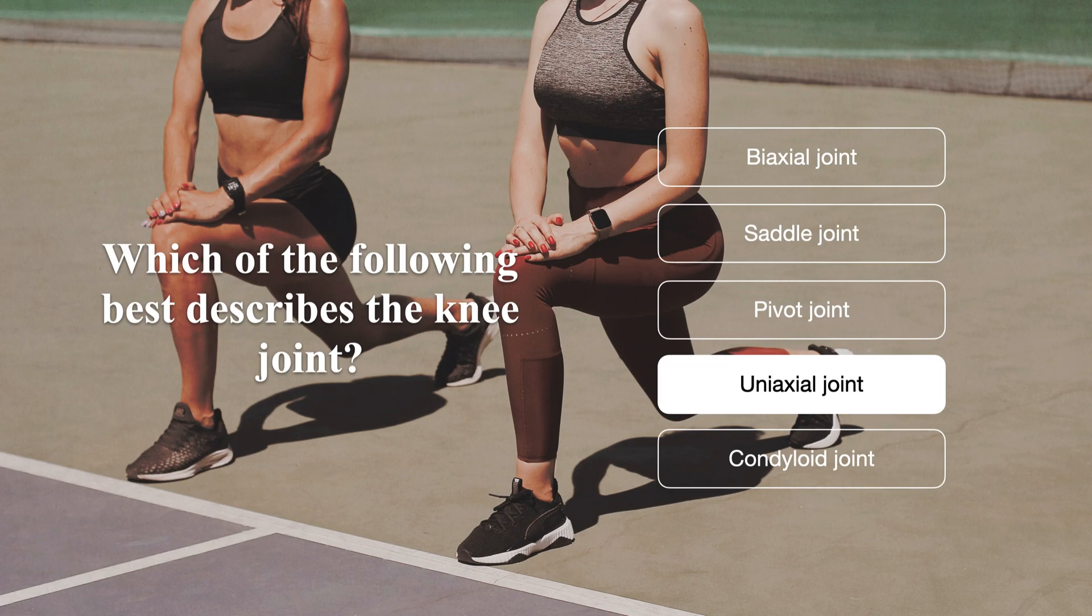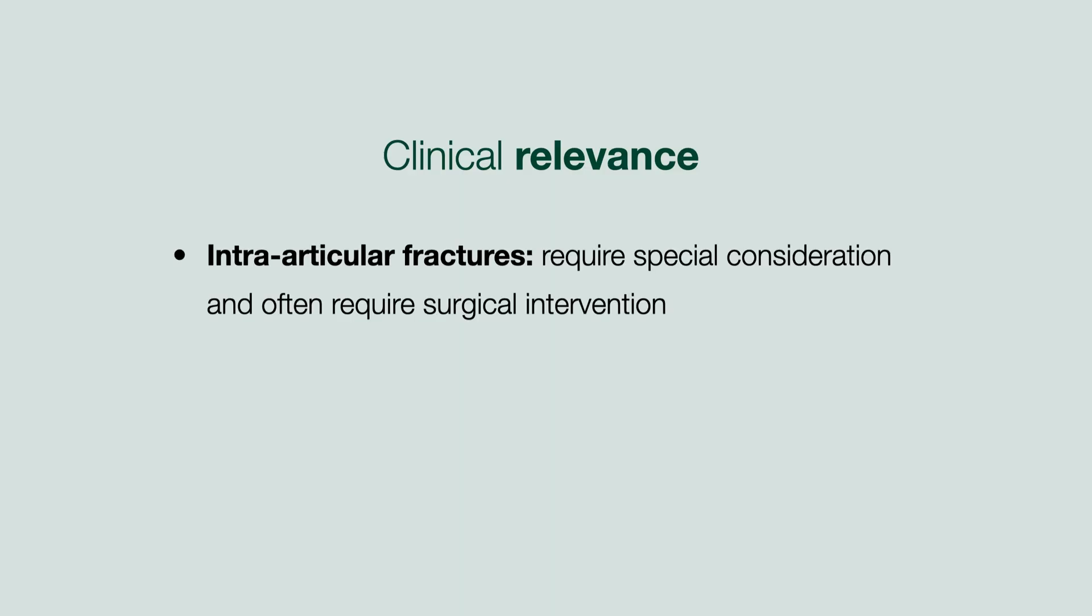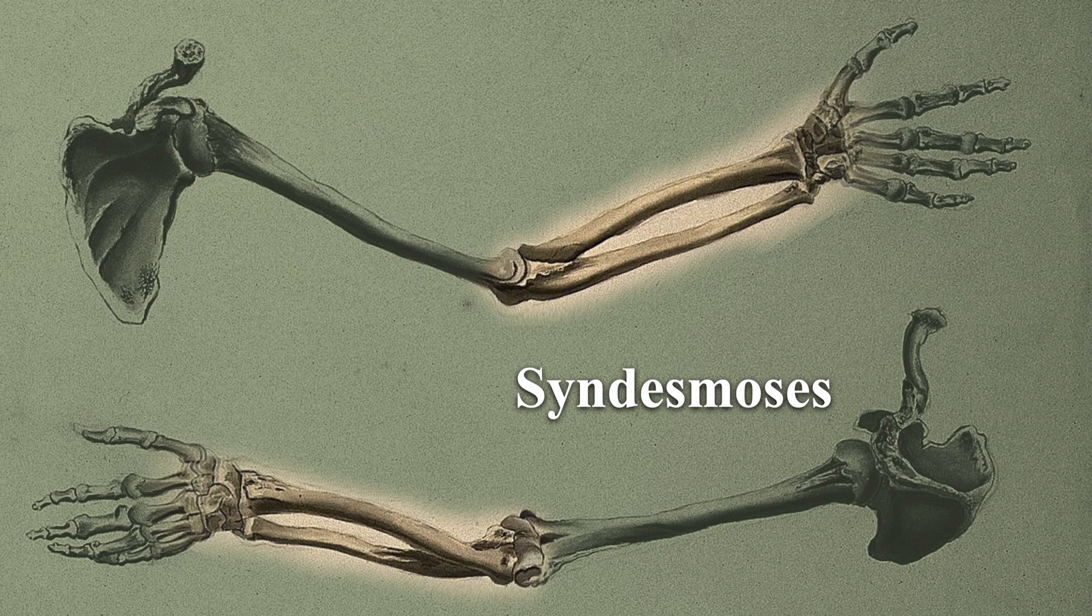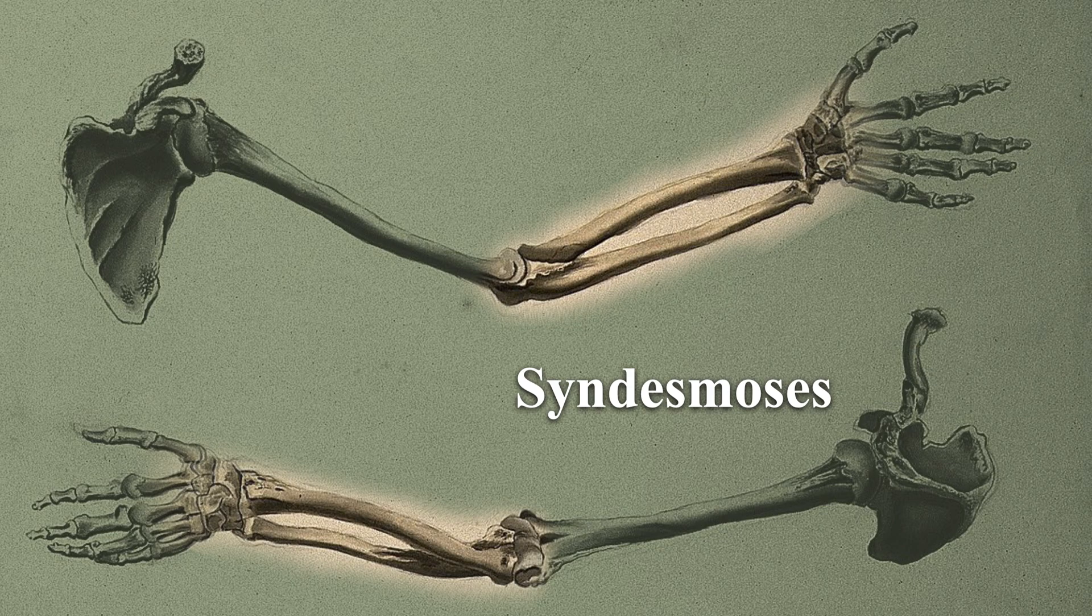It is important to recognize the different joint surfaces, as fractures involving the joint, known as intraarticular fractures, require special consideration. They often require surgical intervention, as the aim is to restore as much of the joint function as possible. Note that fractures of the forearm are generally considered intraarticular, given that a syndesmotic joint exists between the radius and the ulna.